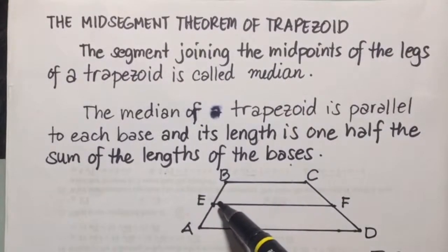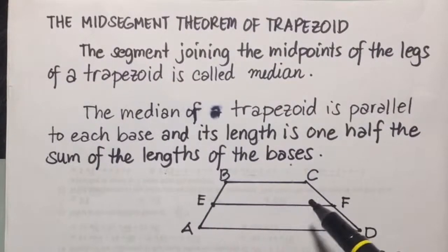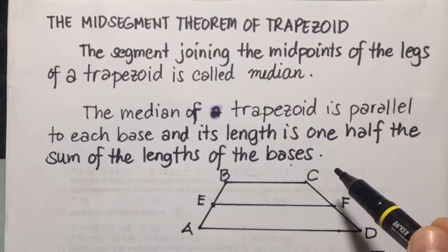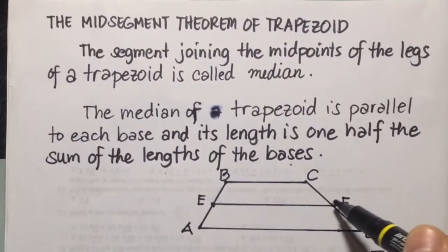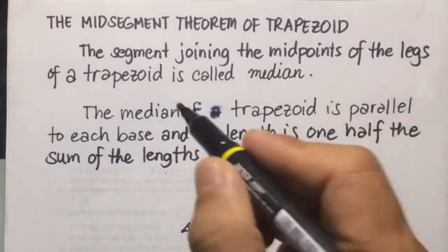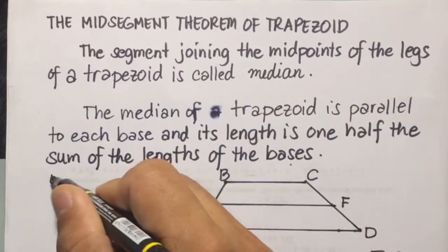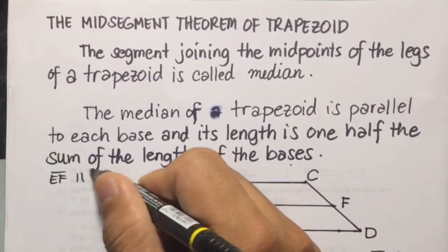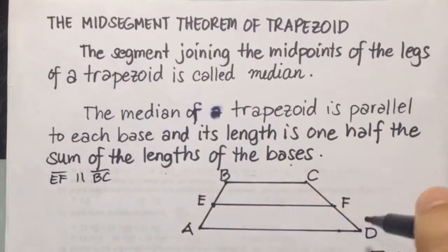So in here, the drawing, this is the median EF. And the median of a trapezoid is parallel to each base. And its length is one half the sum of the lengths of the bases. So this median here is parallel to the bases. So we're going to have here the median EF is parallel to the bases BC and AD.